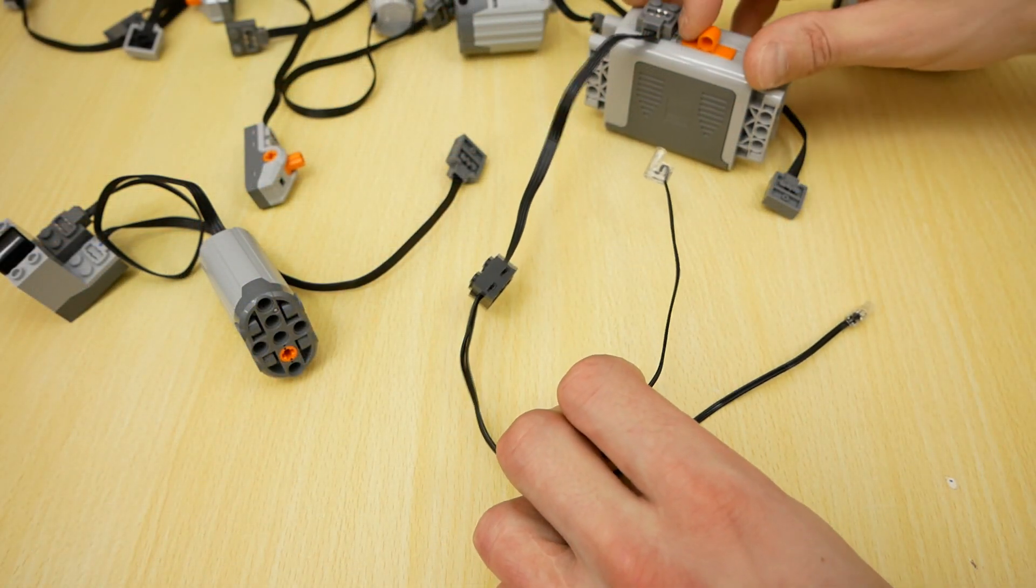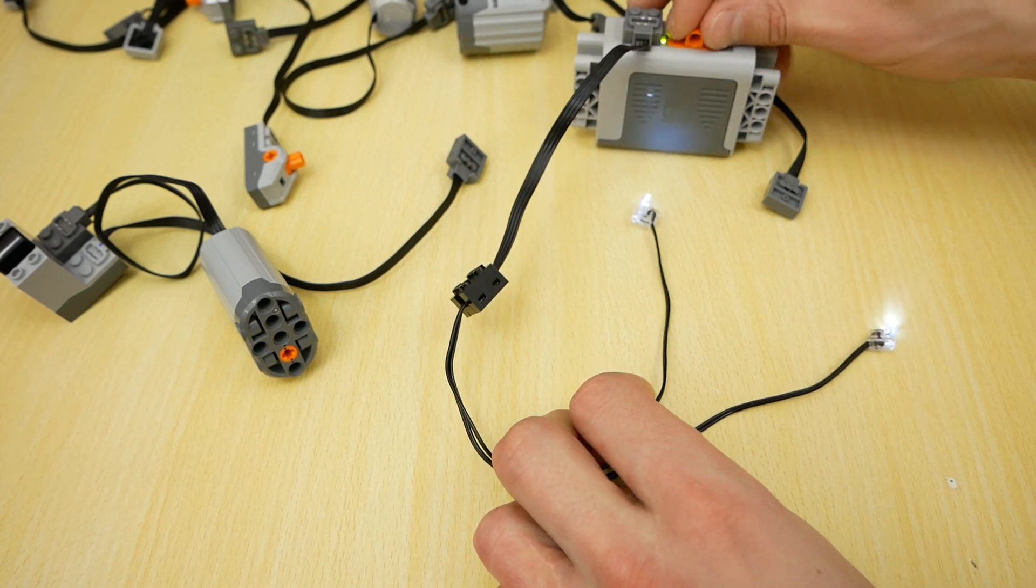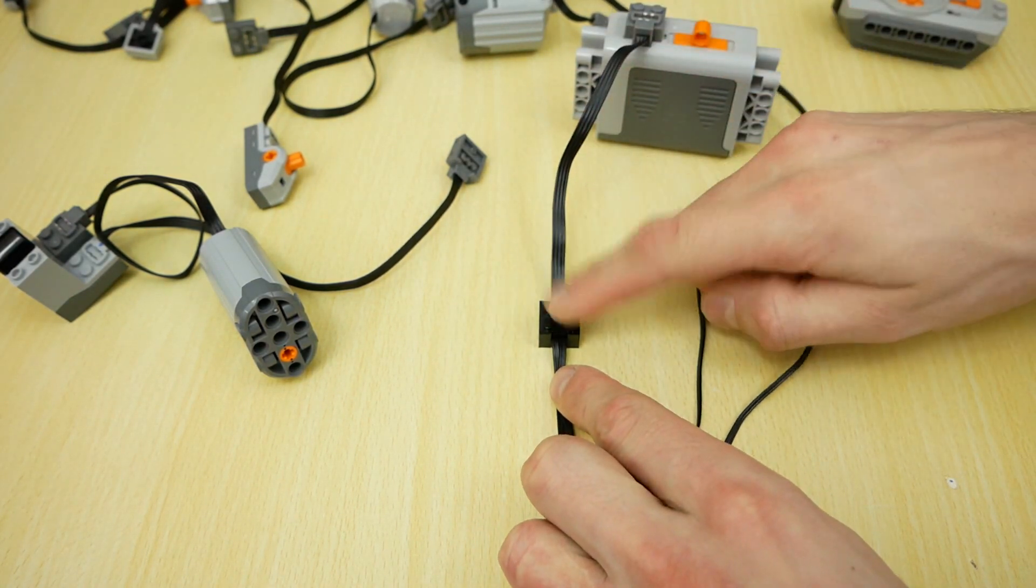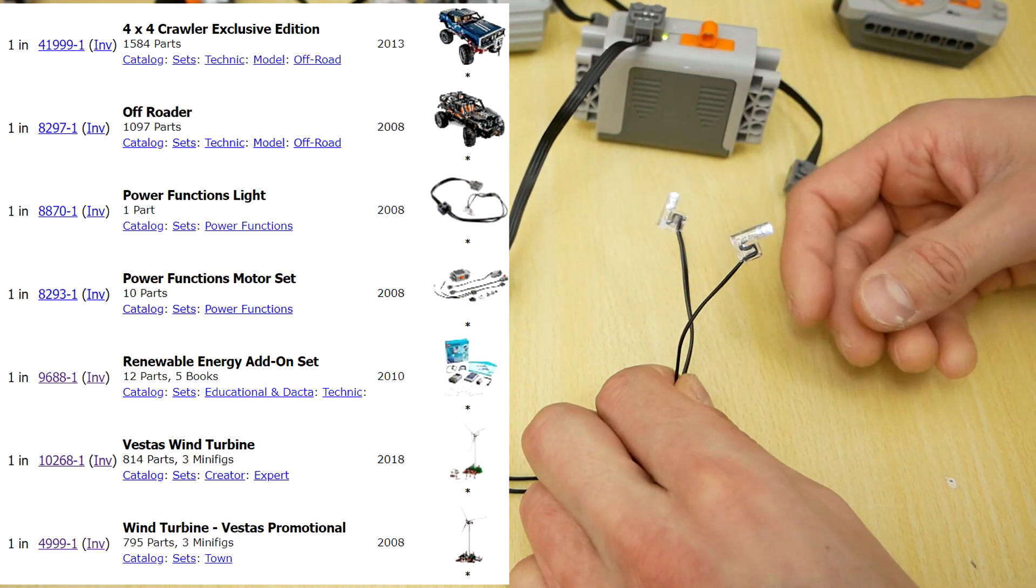Light emitting diodes work at any polarity. I suppose here is mounted diode bridge. These diodes are not too bright, only for model decoration.